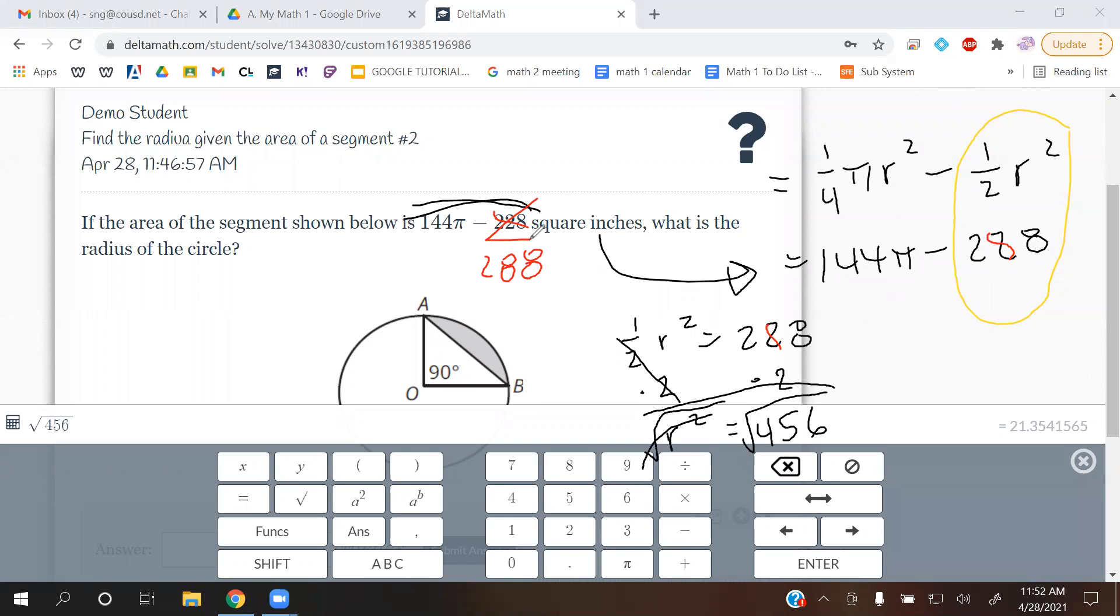So when you multiply 288 times 2, like literally just solving it with the same steps, 288 times 2, that gives you the square root of 576. And then when you type that in the calculator, it should give you 24. So the answer for this one is 24. Okay, so sorry about that.